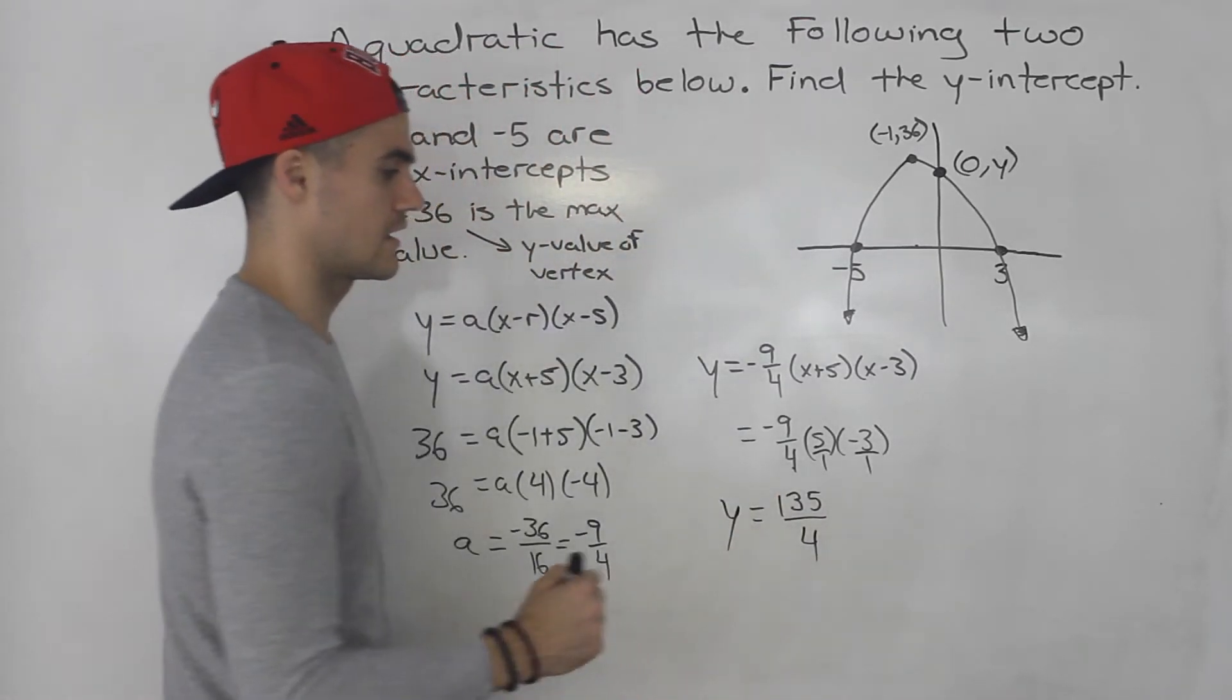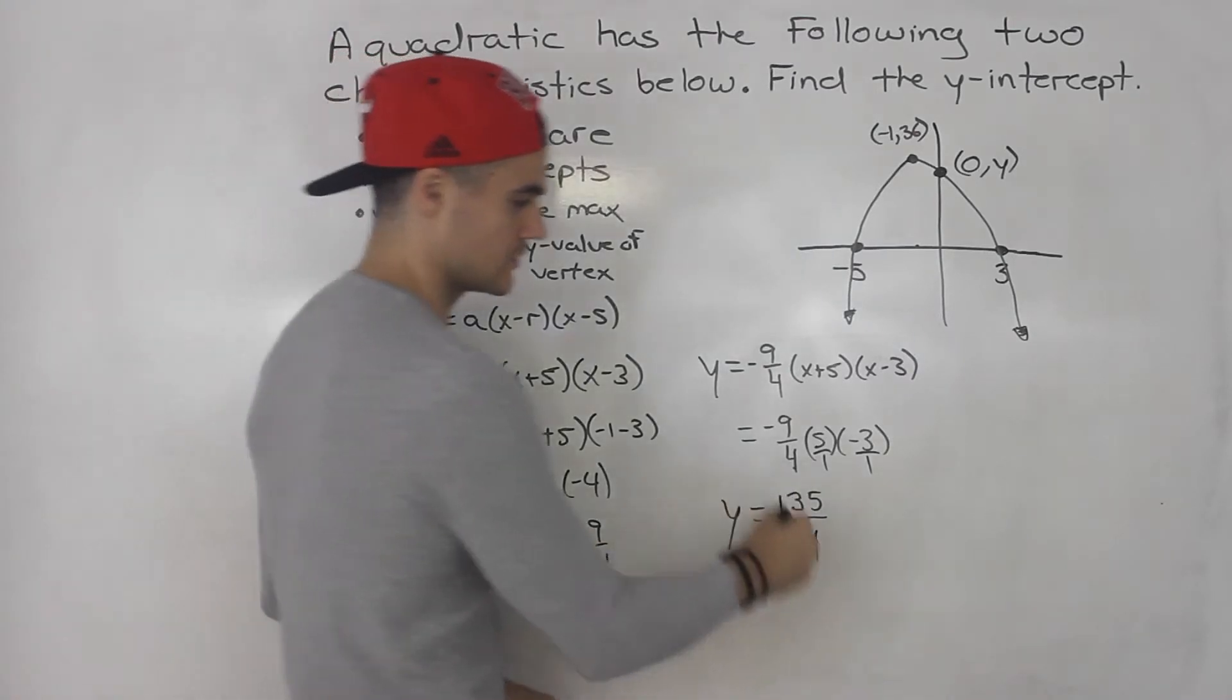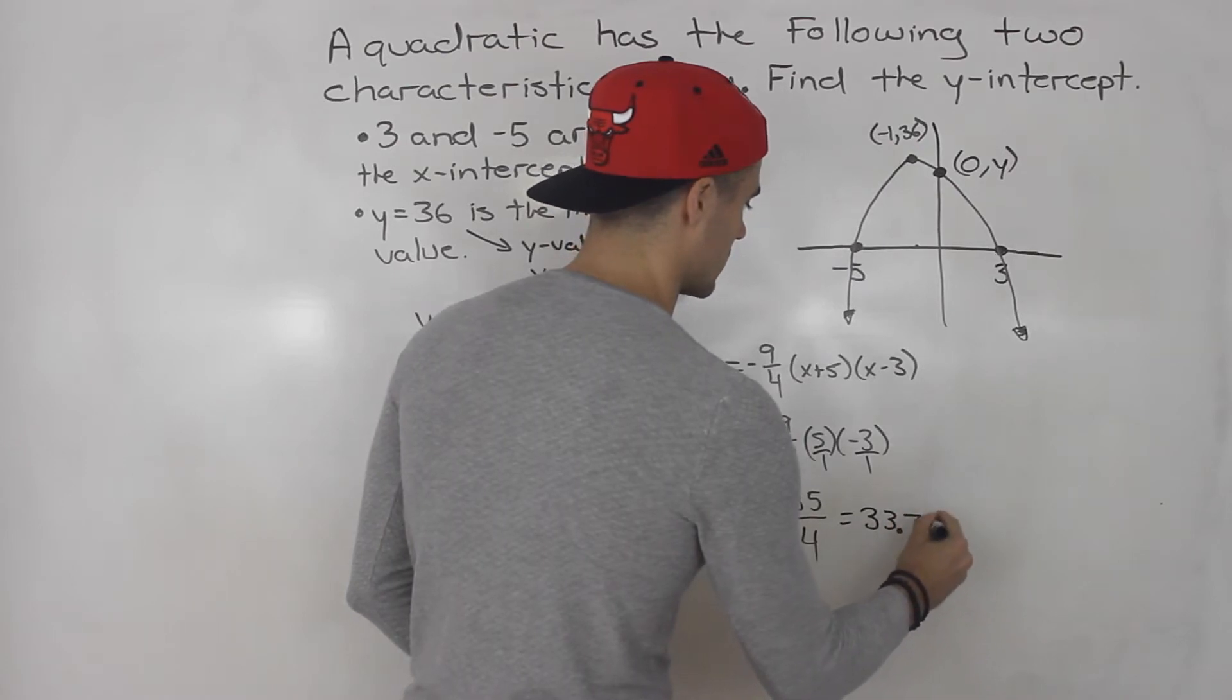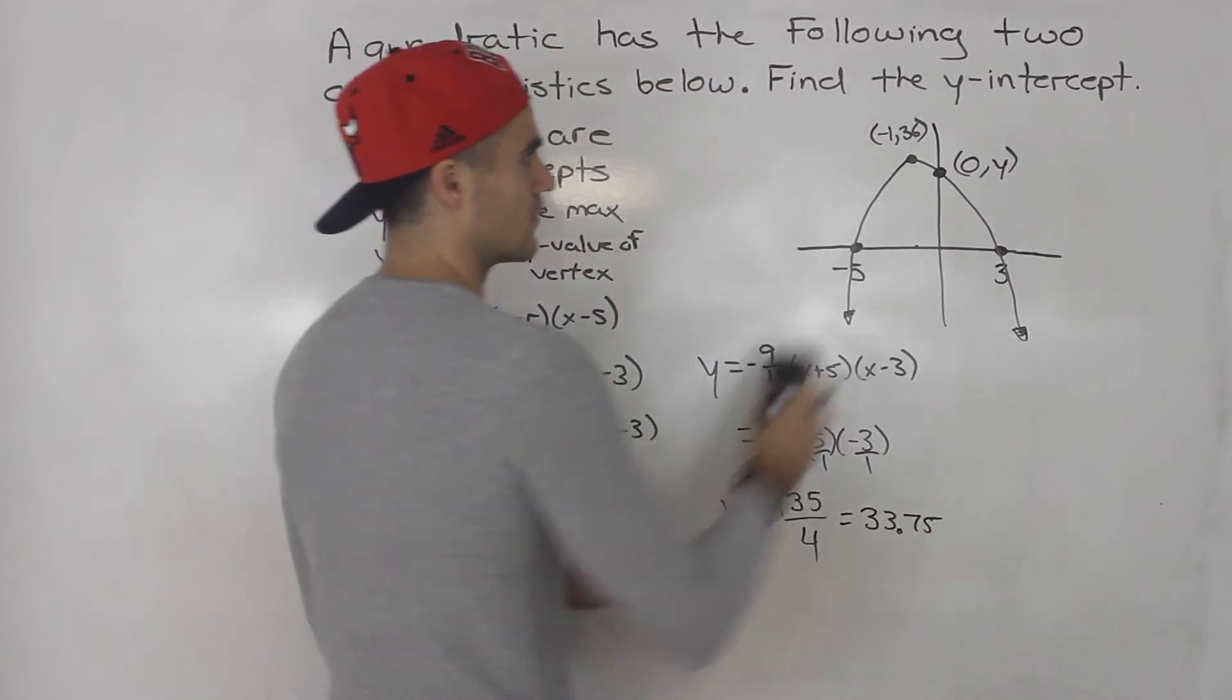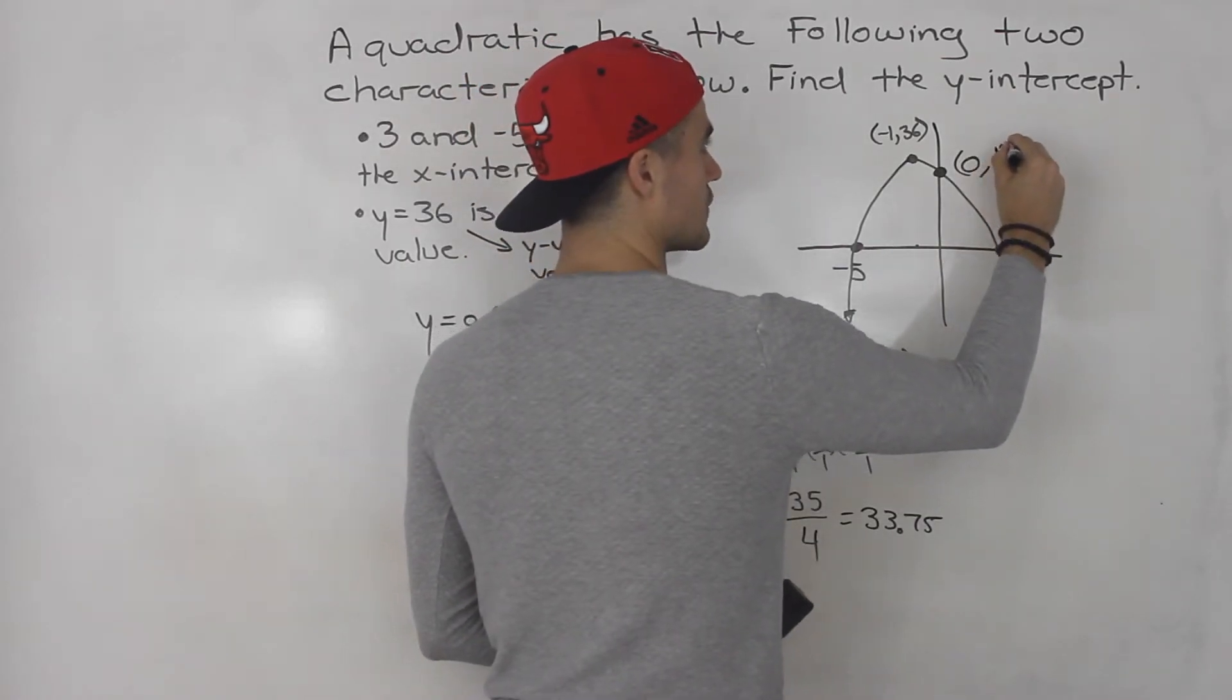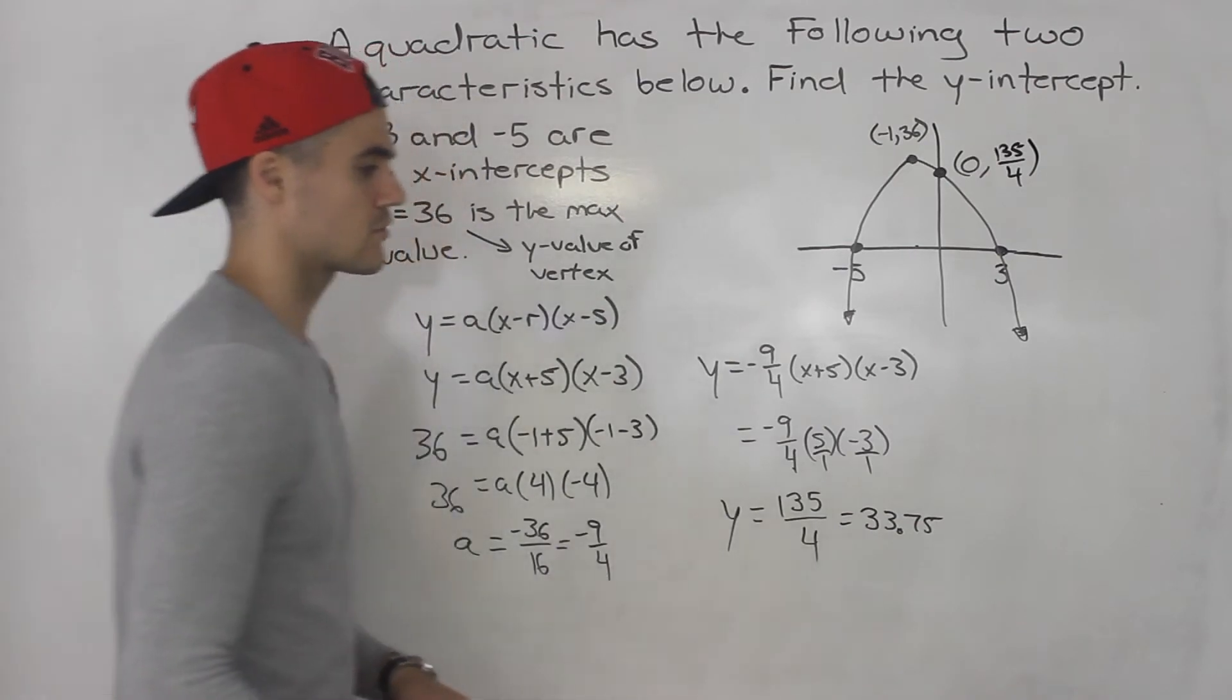So, that there is your y-intercept. And if you want the decimal value of that, if you divide that in your calculator, you end up getting 33.75, right? So, 0 and 135 over 4 is the y-intercept, or 0 and 33.75.